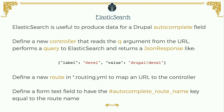Elasticsearch is very useful for powering an autocomplete field in Drupal 8. We define a new controller that reads the query argument from the URL, performs a query to Elasticsearch, and returns a JSON response. In the routing file of our module, we define a new route for this controller, and in the form text field we add the key autocomplete_route_name with that route name — and Drupal 8 handles the rest of the autocomplete functionality automatically.